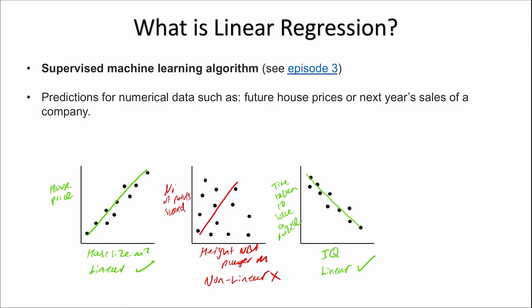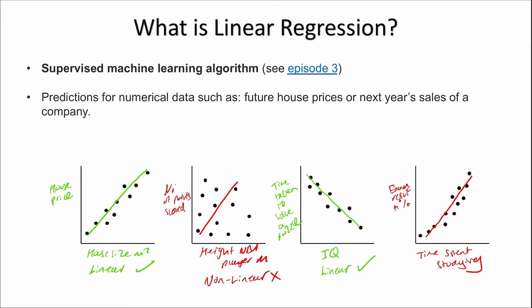For our final example, let's say we plot the time spent studying versus the exam result as a percentage. We could draw a line here to try to capture the relationship, but it may seem more appropriate to draw a curve instead. So in this case this would be non-linear — however there is still definitely a relationship, and the way we capture it is through something called non-linear regression, which I hope to cover in the future.